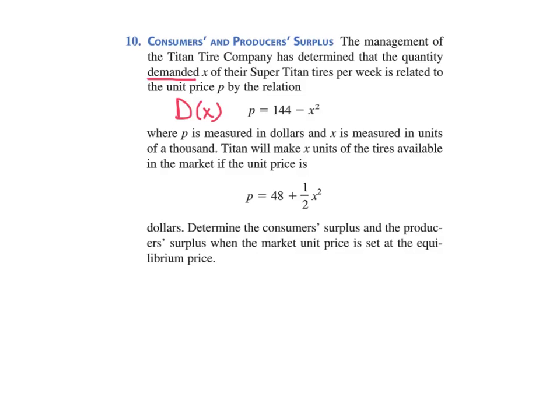And notice p is measured in dollars, but x is measured in units of 1,000. And that's going to be a big deal. When we get done, we're going to multiply by 1,000. Titan will make x units of tires available in the market if the unit price is p equals 48 plus one half x squared. This is the supply function, which we'll use to compute the producer surplus.